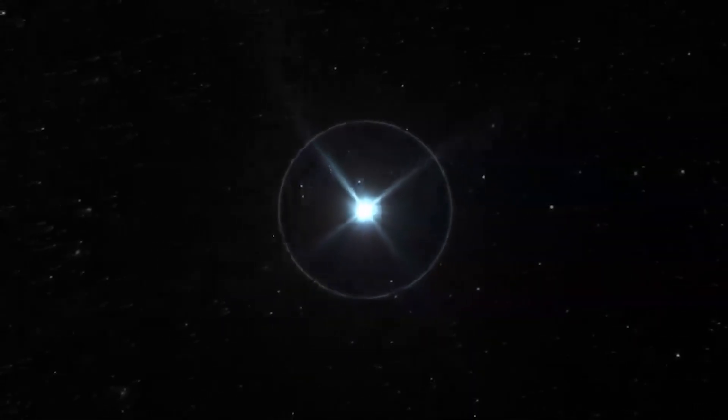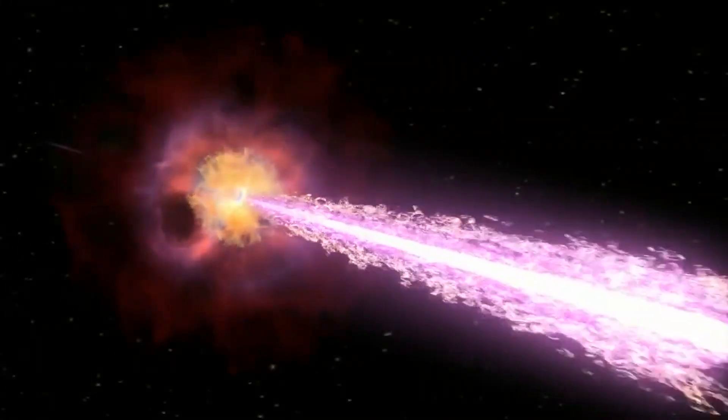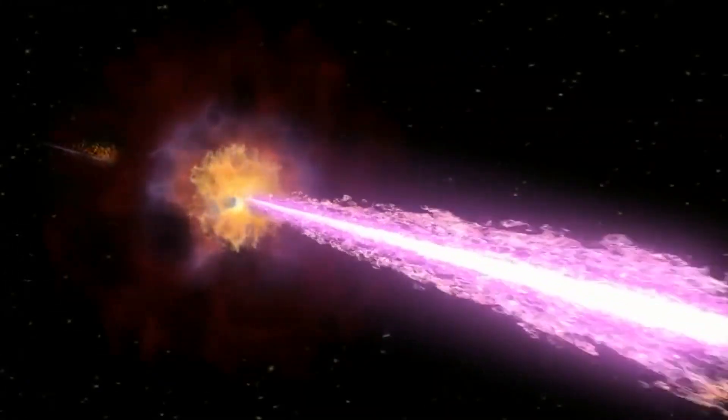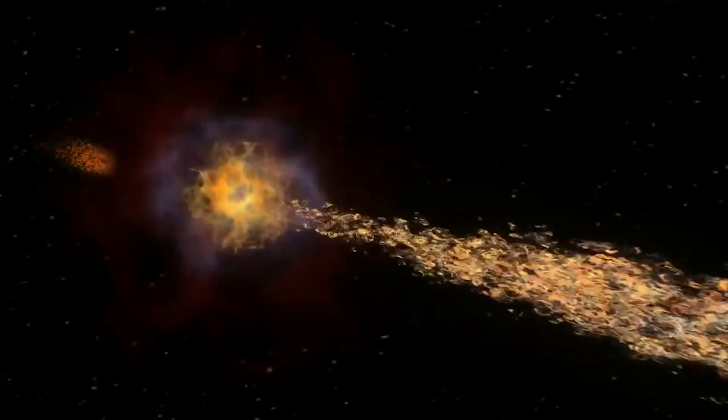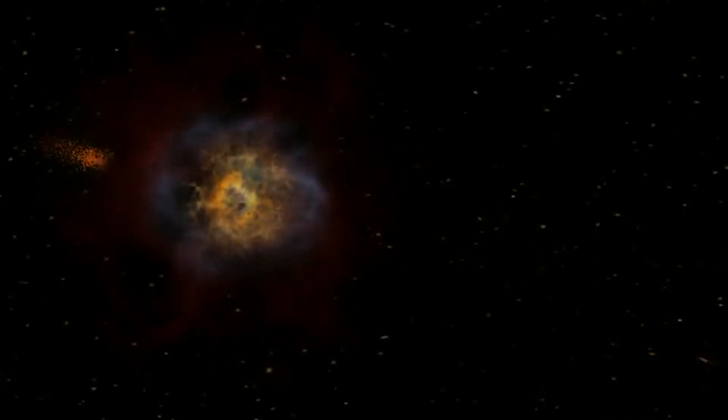Cores of dying stars compress to such an extreme degree that they transform into other things when they finally collapse. For instance, when our sun dies, it will leave behind a white dwarf the size of our planet that is made up of very compressed carbon and oxygen atoms.